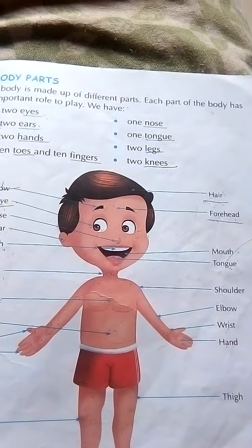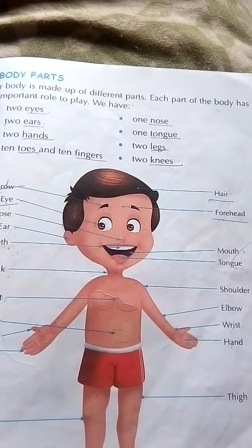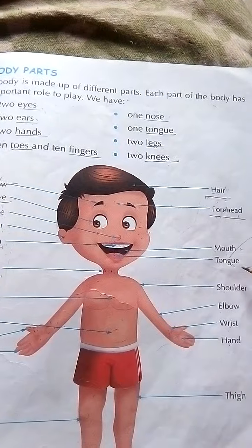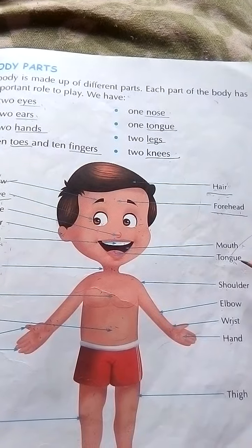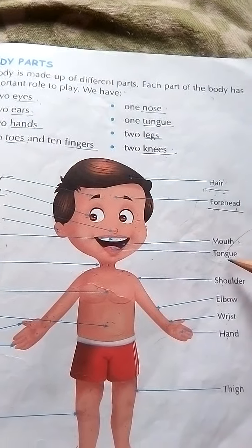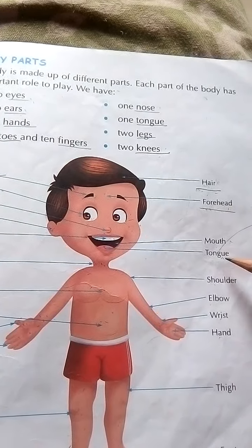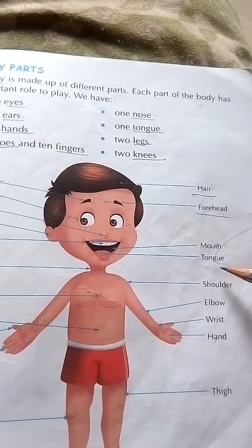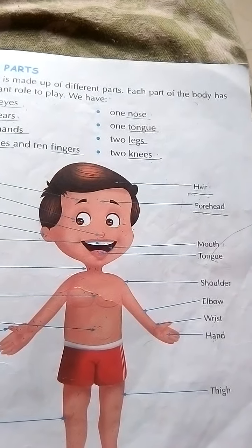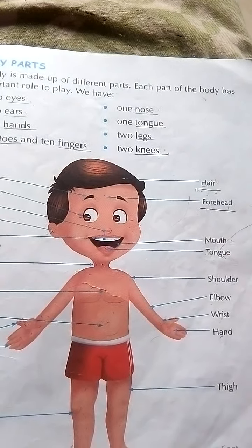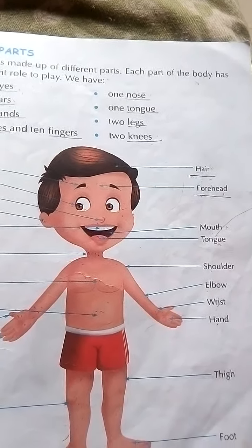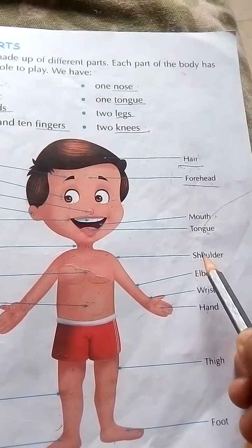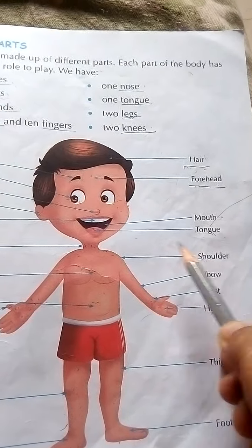The tongue — T-O-N-G-U-E — helps us to taste. There are four types of taste we can sense with our tongue: sweet, salty, bitter, and sour.